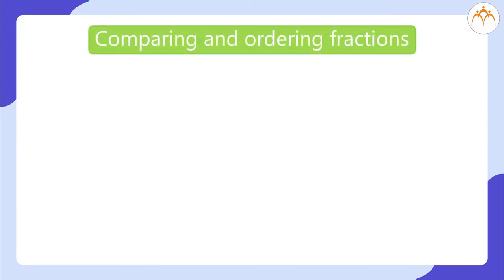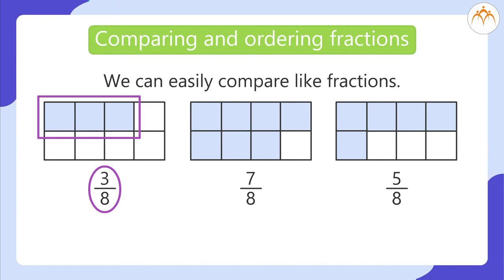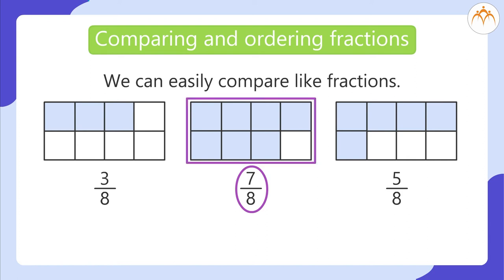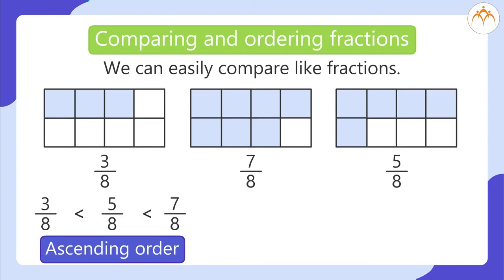Comparing and ordering fractions. We can easily compare like fractions. Consider 3 by 8, 7 by 8, and 5 by 8. From the figure, 3 by 8 is the smallest fraction — it has the smallest shaded region. 7 by 8 is the greatest fraction — it has the greatest shaded region. We write these fractions in ascending order: 3/8 < 5/8 < 7/8, from smallest to greatest.